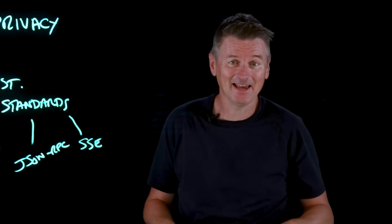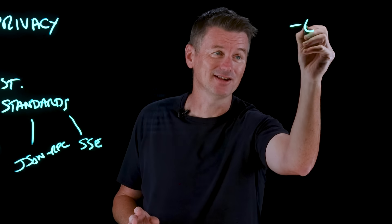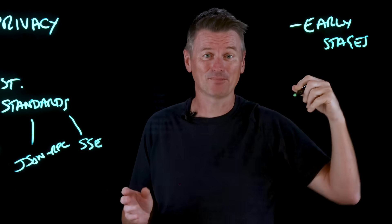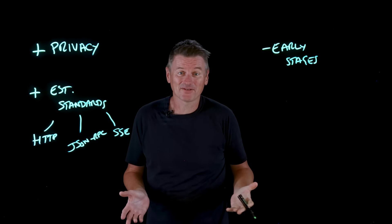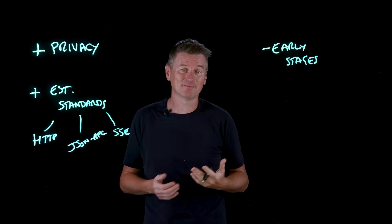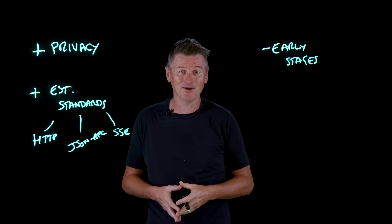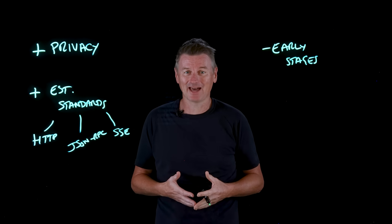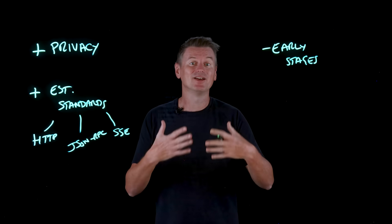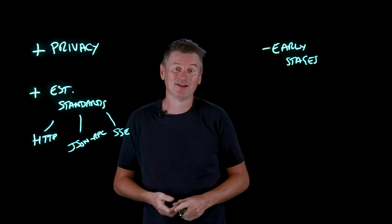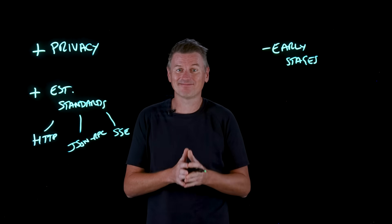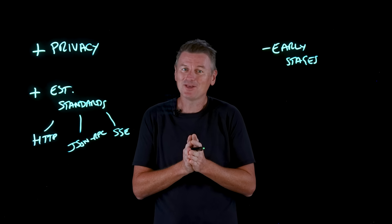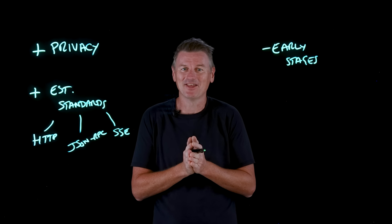A2A is in its early stages — this is all pretty new and things will still improve. There are challenges still to overcome, including improvements in security, governance, and performance tuning. But at its core, A2A provides a way for AI agents to communicate over a trusted, universal channel. It's a common language for agent ecosystems, and that's a good thing to have.